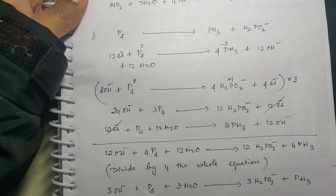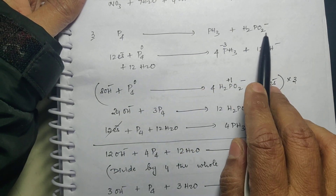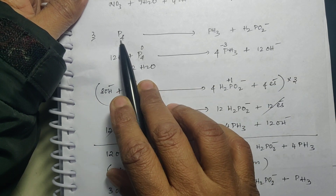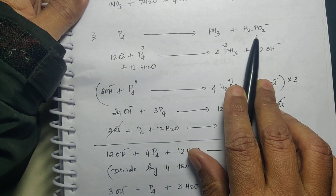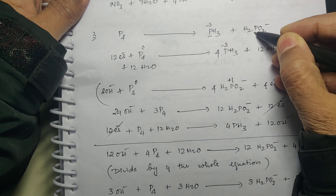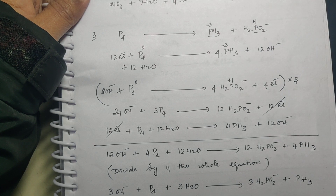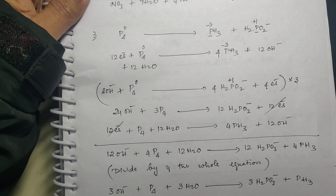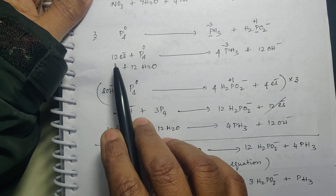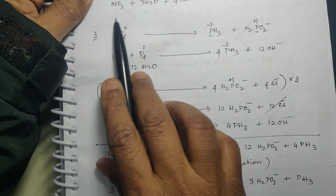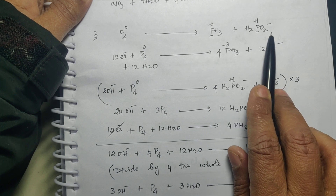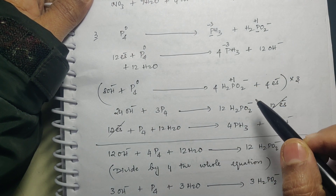Now one more example — slightly difficult but nothing to worry. P₄ is becoming PH₃ and H₂PO₂⁻. From the very equation you can understand this is a disproportionation reaction because P₄ is converted to PH₃ and the same P₄ is also getting converted to H₂PO₂⁻. Here P is in -3 state, here P is in +1 state, and in P₄ it is 0. So 0 to -3 is reduction and 0 to +1 is oxidation.